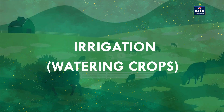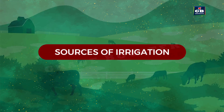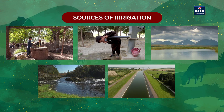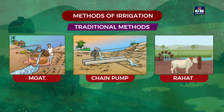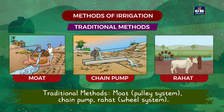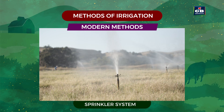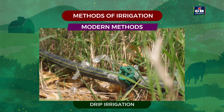Irrigation means watering crops. Water is essential for plant growth. Sources of irrigation include wells, tube wells, lakes, rivers, and canals. Traditional methods: moat or pulley system, chain pump, and rahat (wheel system). Modern methods: the sprinkler system sprays water like rain and is used in uneven lands. Drip irrigation saves water and is best suited for fruit and vegetable plants.